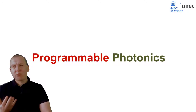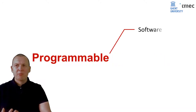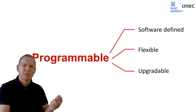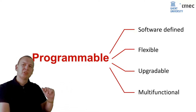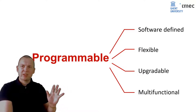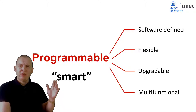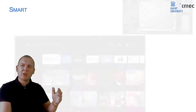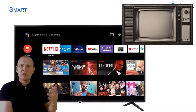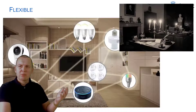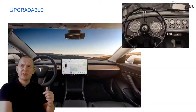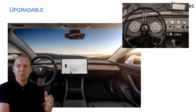If we think about programmable, we usually think about stuff that can be defined in software. And that makes it flexible, upgradable, and multifunctional. We've seen that in plenty of examples in the past decades. Everyday things have become smart: the phone has become a smartphone, the TV has become a smart TV, a house has become a smart home, and cars have become smart — even upgradable over the air in software.